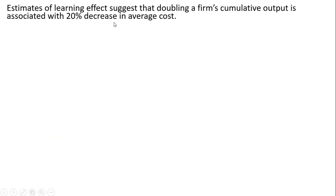Estimates of the learning effect suggest that doubling a firm's cumulative output is associated with a 20% decrease in average cost. Let's look at the learning curve equation.